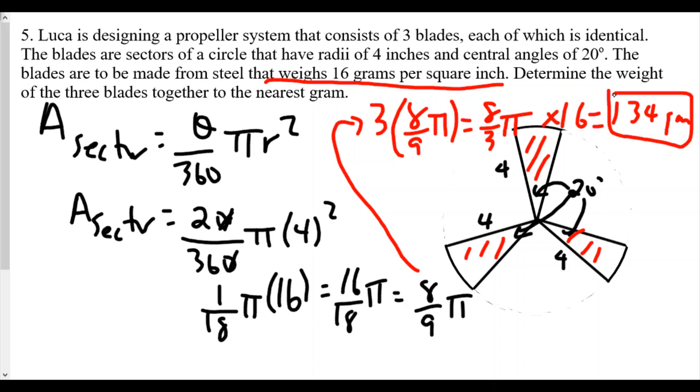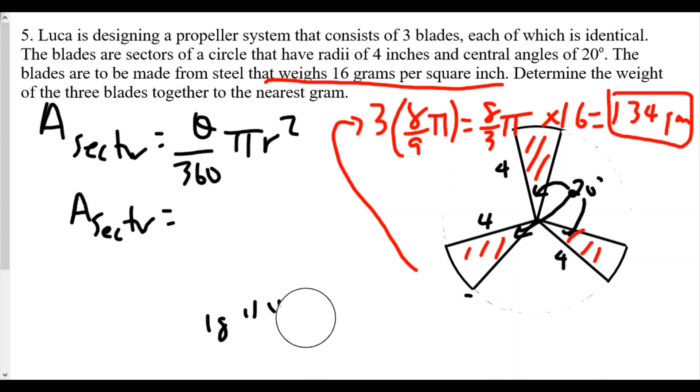Now we can also do this another way. So our other way of doing this, the adjustment would be here of just going straight into combining the three angles together. So we have in this case, we know instead of using 20 and 20 and 20, we use 60 over 360 times πr². So π times 4 squared. Well, 60 over 360 is 1/6. So 1/6 π times 16.